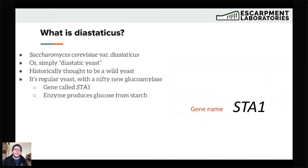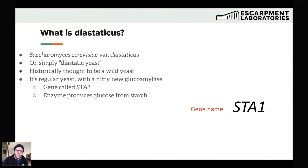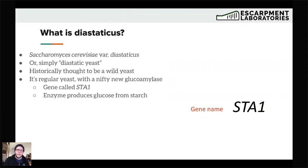So what is diastatic? The scientific term you'll usually see is Saccharomyces cerevisiae var. diastaticus, or simply diastatic yeast. That definition is sort of changing — we know this isn't a subspecies or anything special. The only difference is that it has one special gene. So really it is Saccharomyces cerevisiae with a gene that gives it diastatic properties. We usually just call it diastatic Saccharomyces cerevisiae. Historically it's been thought to be a wild yeast, though we'll see later that may not always be the case.